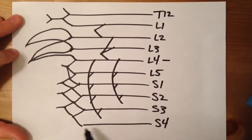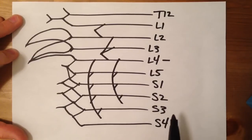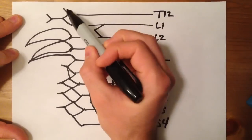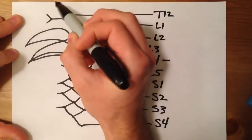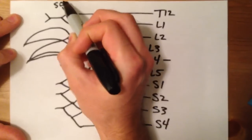So let's go through these. This is pretty much the whole plexus right here, but we'll go through each nerve. So this first branch right here at T12, that's your subcostal nerve.